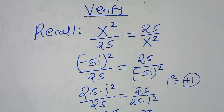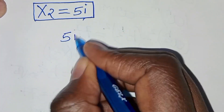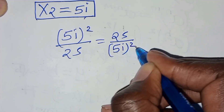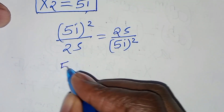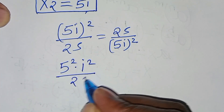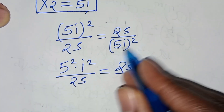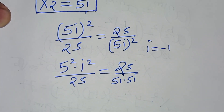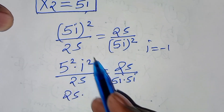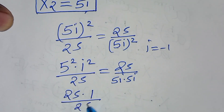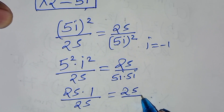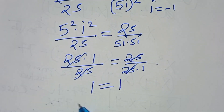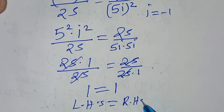Now let's check x₂ = 5i. Substituting, we have (5i)² / 25 = 5² × i² / 25 = 25 × (−1) / 25 on the left, and 25 / (5i)² = 25 / (25 × (−1)) on the right. Both sides simplify to 1 = 1, so x₂ satisfies the equation.